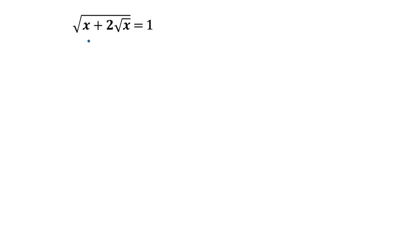Hello everyone. In this video I am going to show how to find the value of x where square root of x plus 2 times square root of x is equal to 1. Taking a square to both sides, you can write square root of x plus 2 times square root of x, whole square, is equal to 1.